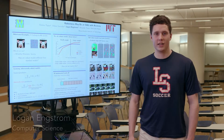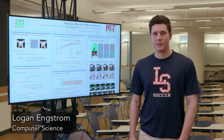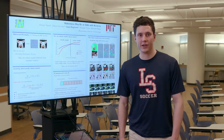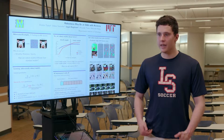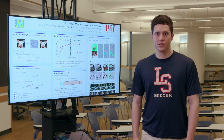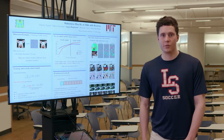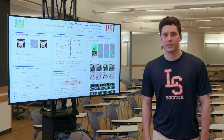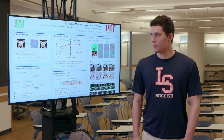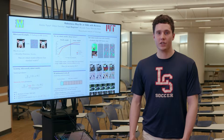My name is Logan Angstrom and I'm a computer science major at MIT. I'm going to talk about the trade-offs associated with robust machine learning. Recently there's been an explosion in the use of neural networks for image tasks, and neural networks have absolutely blown away the competition on standard image classification tasks. But they all suffer from the same vulnerability of adversarial examples.